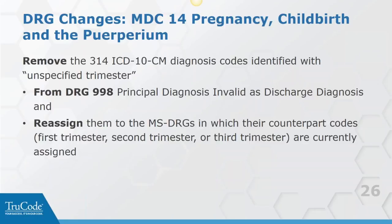CMS has said: the fact that the trimester is not specified does not preclude the significance of these conditions, nor the resources involved in caring for patients with these conditions. So while they encourage providers to focus efforts on improving documentation, they also believe DRG assignment should appropriately reflect the resources. This is a place where we're stepping back from the hard line of 'we can't use unspecified,' because in reality we all know that sometimes that's as good as you get - you have to use unspecified.